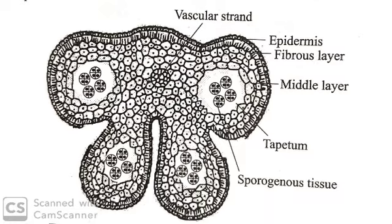The four layers of the anther wall are: epidermis, endothesium, middle layer, and tapetum. Let's see each one by one.